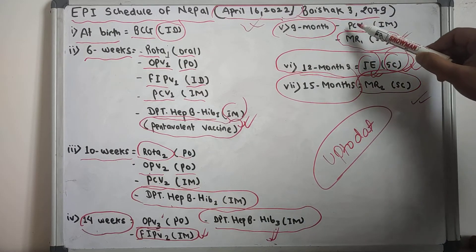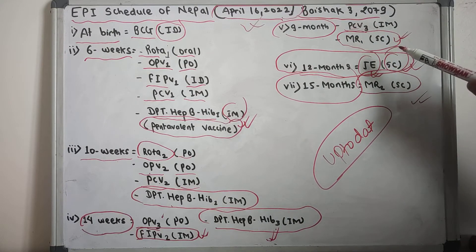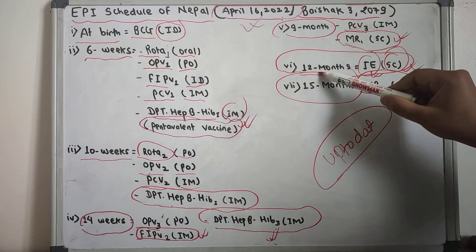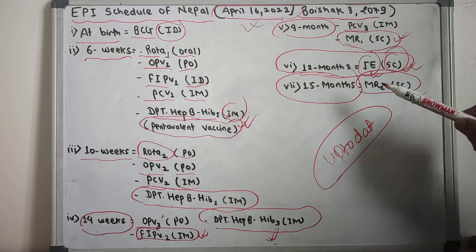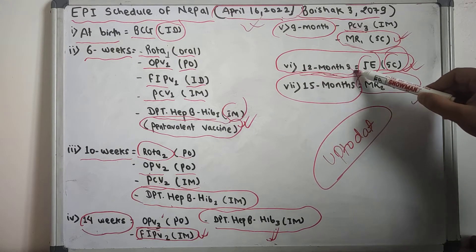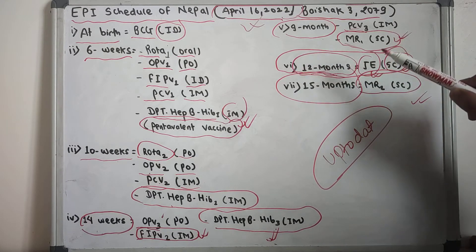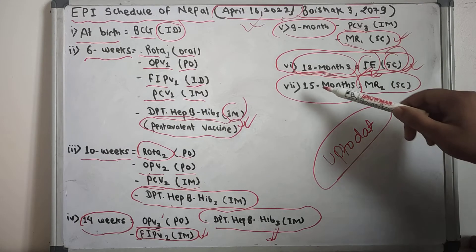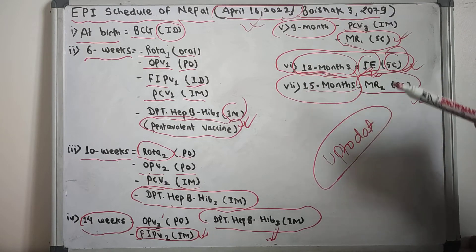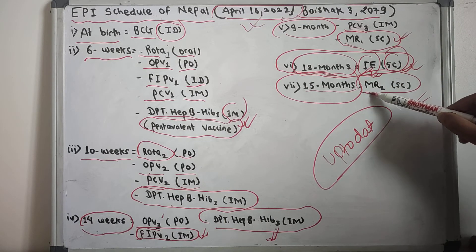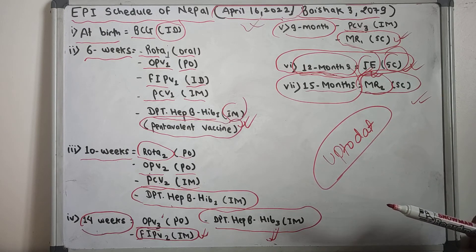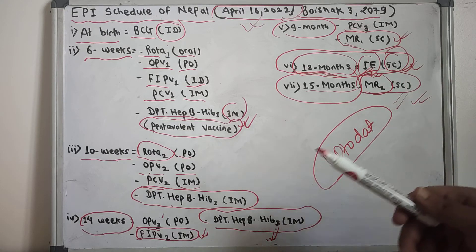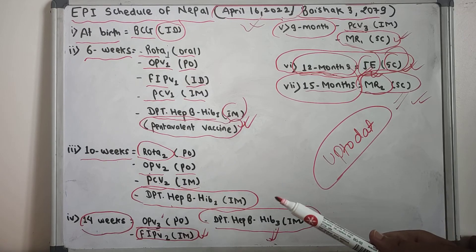At 9 months — third dose of PCV and first dose of MR vaccine. At 12 months — Japanese Encephalitis vaccine. At 15 months — second dose of Measles and Rubella vaccine. This is the EPI Schedule of Nepal.